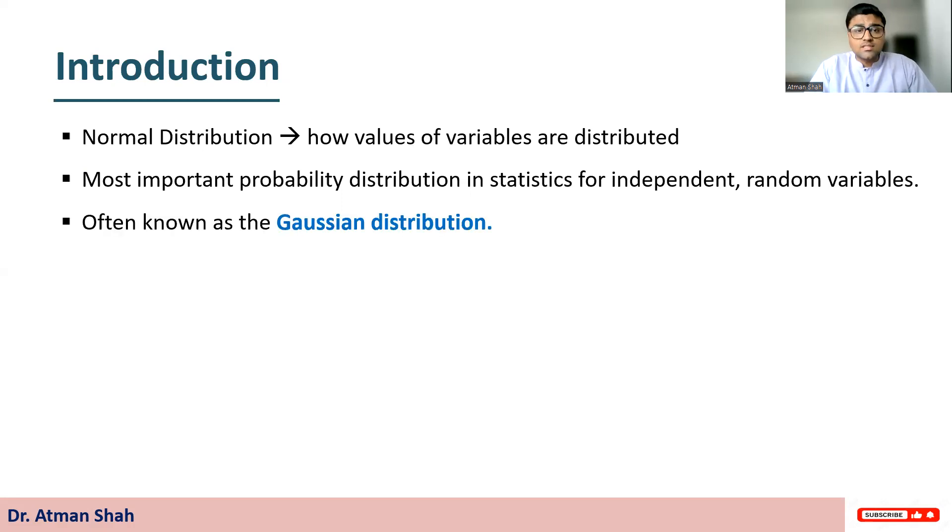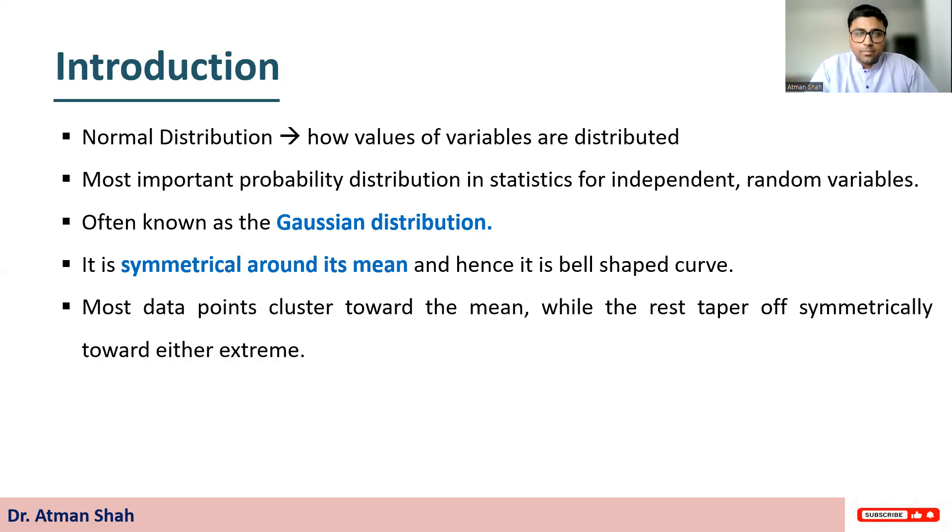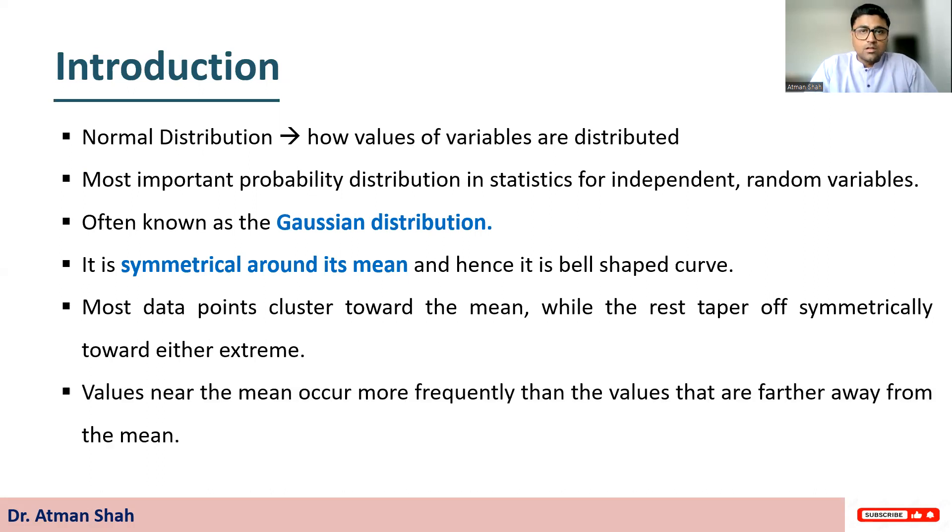It is also known as Gaussian distribution. So this distribution is symmetrical around its mean and hence it is bell shaped curve. So most data points cluster toward the mean while the rest taper off symmetrically toward either extreme. So values near the mean occur more frequently than the values that are farther away from the mean. So that is the idea of normal distribution.